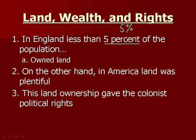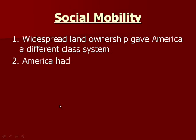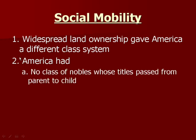Any sort of land ownership gave the colonists political rights. Owning good land or more land might give you even more rights, but owning land gets you political rights. Widespread land ownership gave all those people political rights and developed a new class system. Instead of having kings and lords, America had no class of nobles whose titles were passed from parent to child.